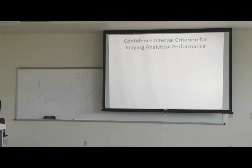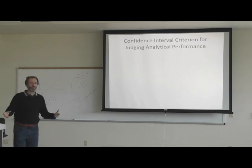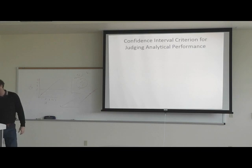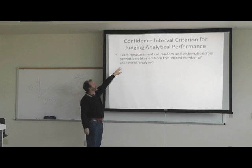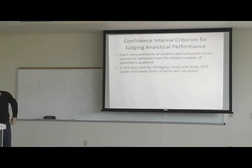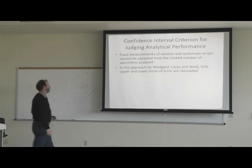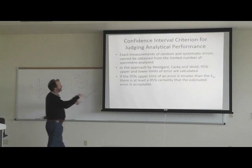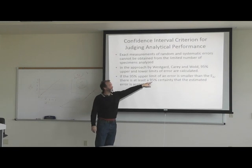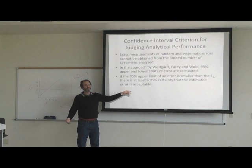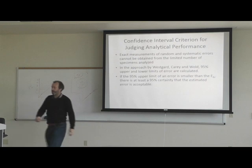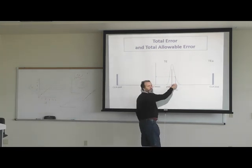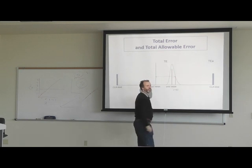Confidence interval criteria for judging analytical performance: exact measurements of random and systematic error cannot be obtained from a limited number of specimens. In the approach by Westgard, Carey, and Wold, 95% upper and lower confidence limits of error are calculated. If the 95% upper limit of error is smaller than the allowable error, there is at least 95% certainty that the estimated error is acceptable. For random error, the upper limit is four times STMU and the lower is four times STML, where the factors are looked up in a table.